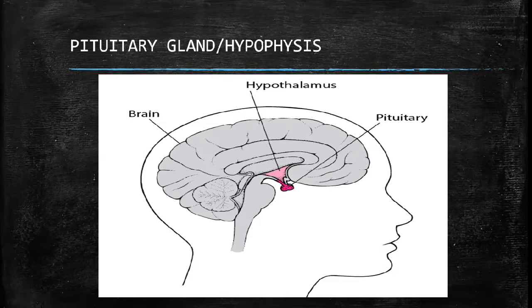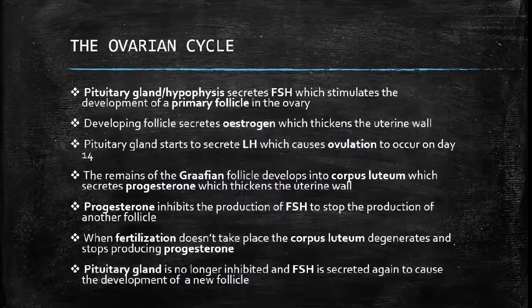I'm going to discuss the pituitary gland further when we do the endocrine system. For now, let us move forward. We are doing the menstrual cycle. Since the menstrual cycle is divided into two parts — the ovarian cycle and the uterine cycle — we're going to look at the ovarian cycle. We call it the ovarian cycle because this cycle only occurs in the ovaries of a woman.